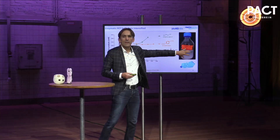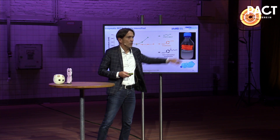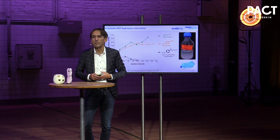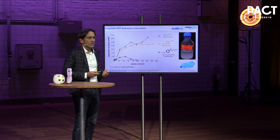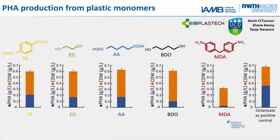You get this liquid and they send it to us in Aachen, and we feed our microbes now with the plastic constituents of a plastic bottle or a plastic film. Here are the chemical formulas — the T of the PET, the E of the PET, and some of the PU of the polyurethane. The orange bar is always how much biomass is produced, and the blue bar is how much bioplastic is produced. Even very complex structures from plastic can now be used as a carbon source.